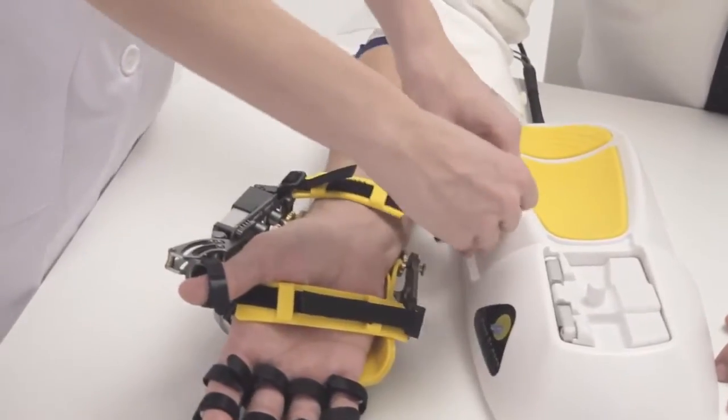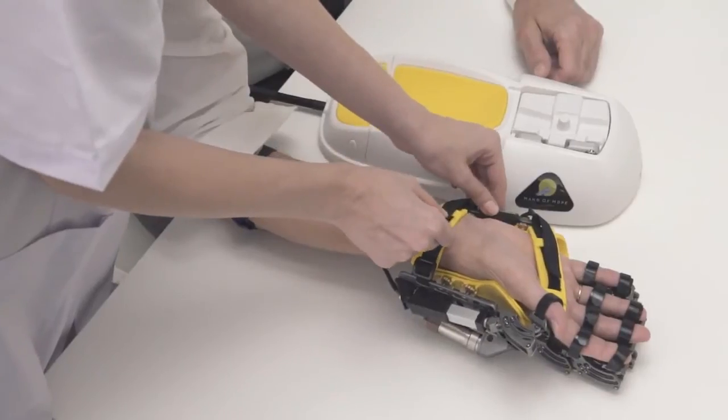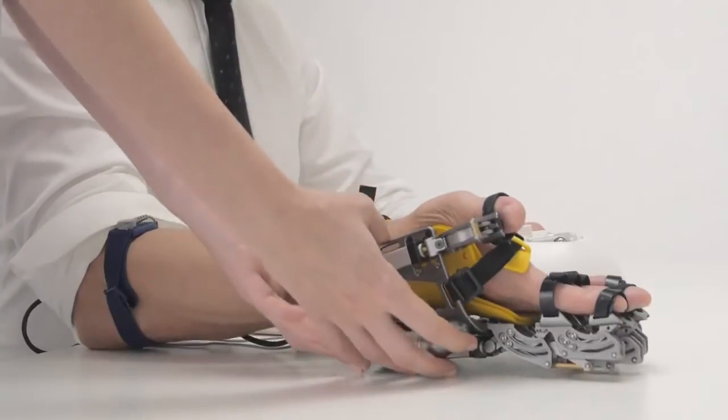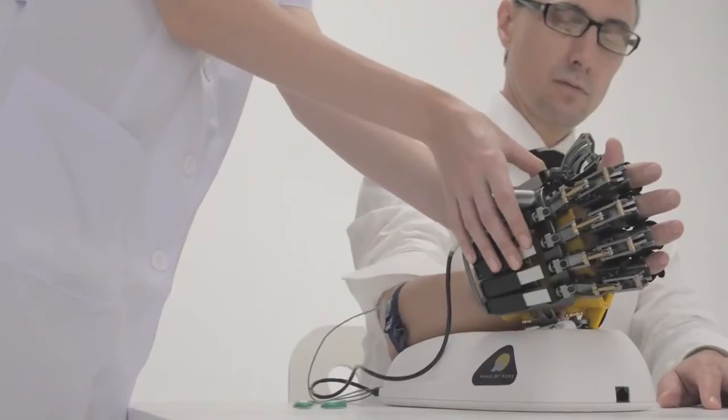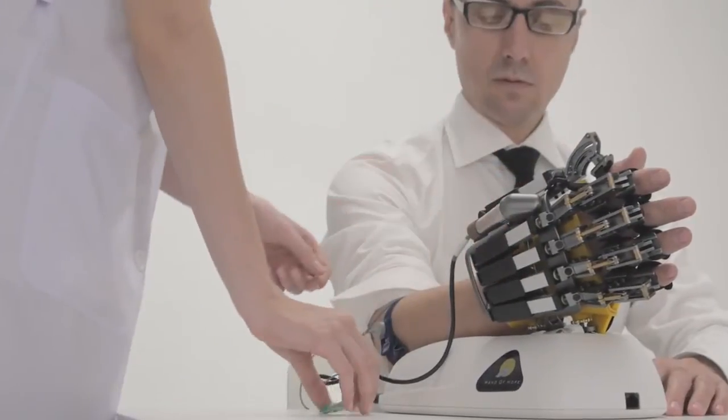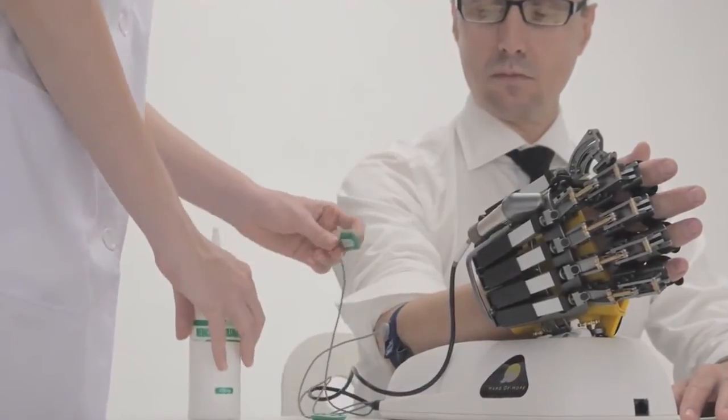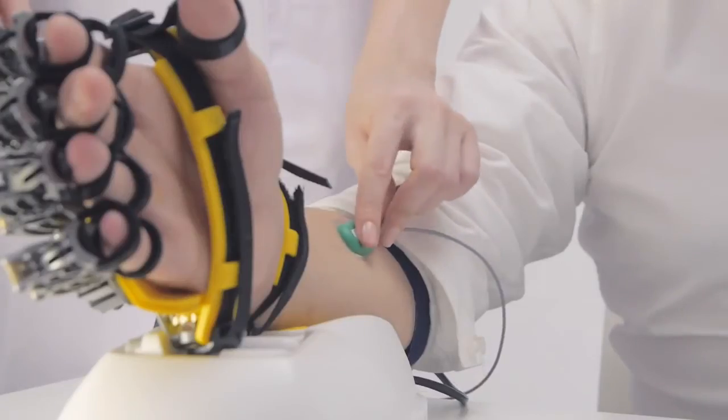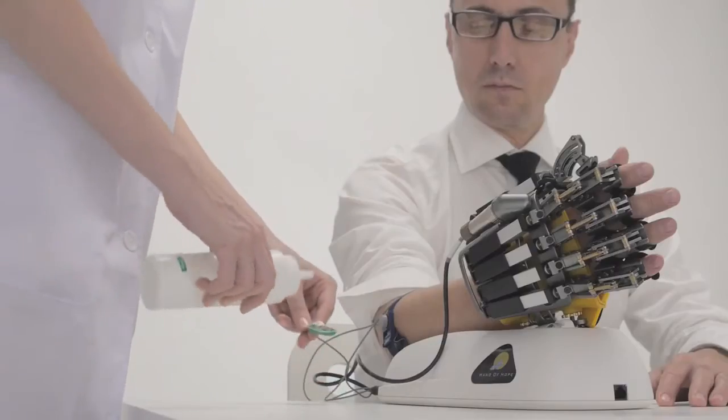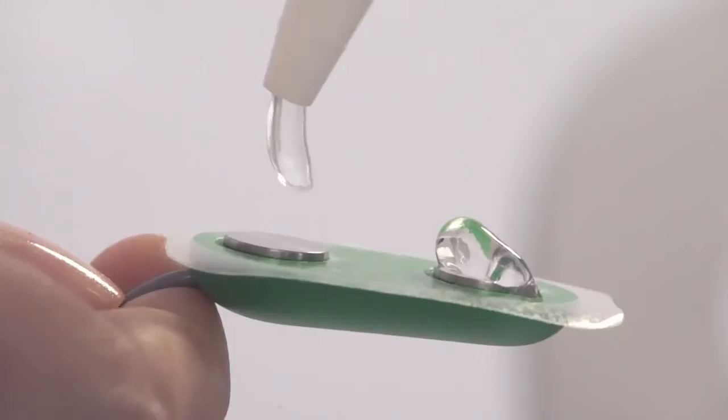Hand of Hope is relatively easy and quick to set up by following simple instructions. Rehab Robotics and Hong Kong Polytechnic University work together to develop it. The effectiveness of this patented technology is proven by clinical trials and published research papers.